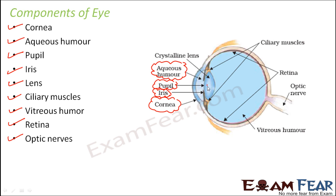Next is the lens, which you can see very clearly here. After that we have ciliary muscles, which are located supporting the lens. The ciliary muscles help in the movement of the lens and help to adjust the focal length of the lens. Next is vitreous humor, which is another fluid present in the inner area of the eye. The fluid in the outer portion of the eye is aqueous humor, while the fluid that fills the entire inner part of the eye is vitreous humor.